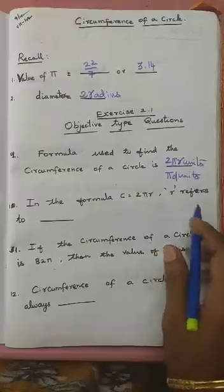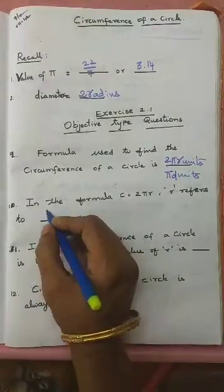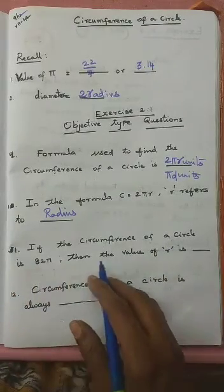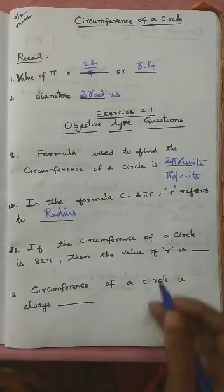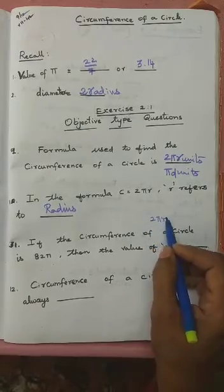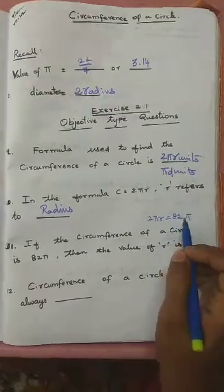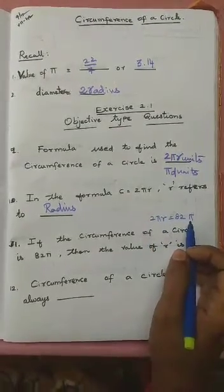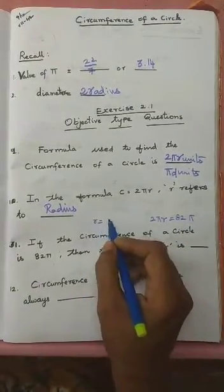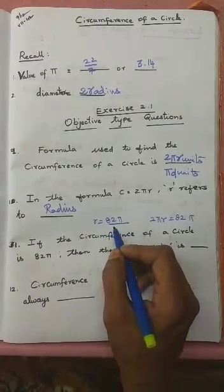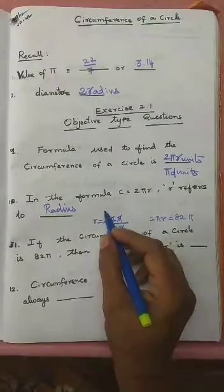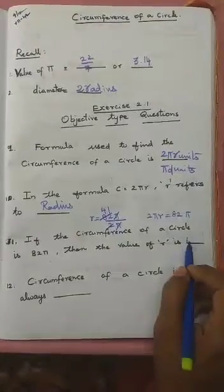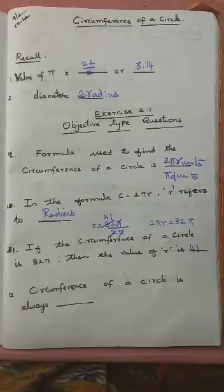In the formula C = 2πr, r refers to radius. If the circumference of a circle is 82π, then the value of r is? We know circumference = 2πr, and it is given as 82π. So r = 82π ÷ 2π. Pi cancels with pi, and 82 ÷ 2 = 41. Therefore the value of r is 41.